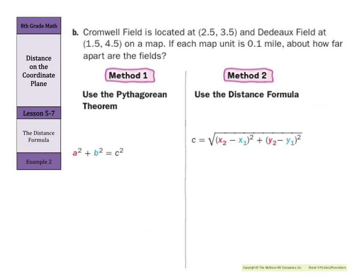Now, as we try this on our own, it says Cromwell Field is located at about (2½, 3½) and Dudot Field at (1½, 4½) on the map. Each unit is 1 tenth of a mile about how far apart are these fields. We could use the Pythagorean Theorem especially if you had a graph where you could count the points. But we're going to focus now on the distance formula since we don't have a graph. So, the first thing we want to do here let's write out our points. We have (2½, 3½), and we have (1½, 4½).